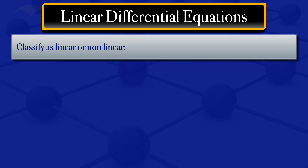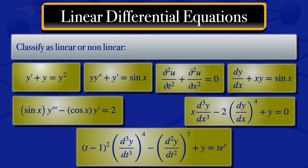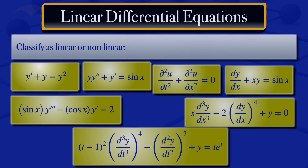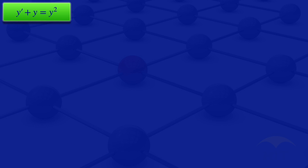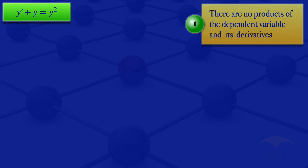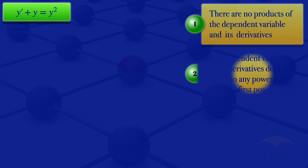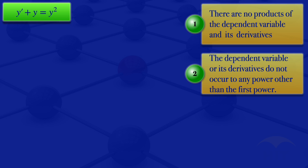In this video I am going to classify the following differential equations as linear or nonlinear. To classify those I will start by looking at the following information. A differential equation is said to be linear if it satisfies two conditions. Number one, there are no products of the dependent variable and its derivatives. Number two, the dependent variable or its derivatives do not occur to any power other than the first power.